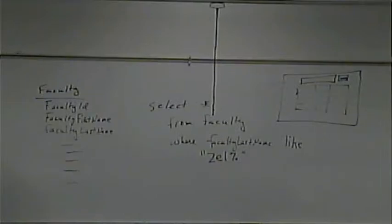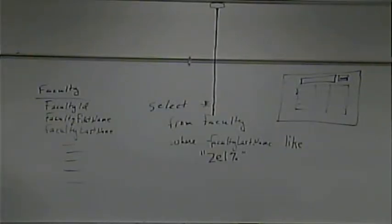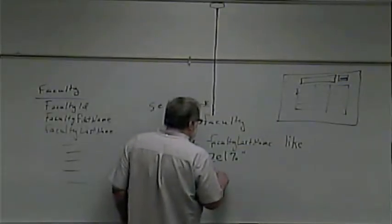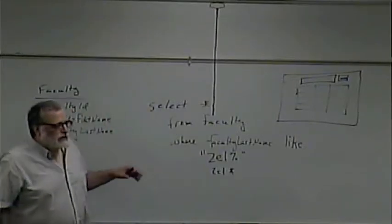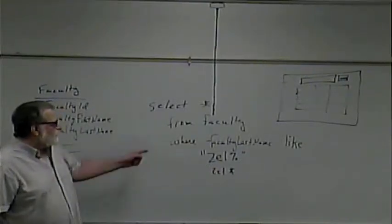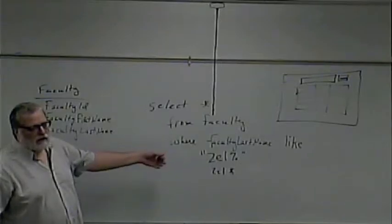That would match things starting with Z-E-L. I'm going to run this test just to be sure, because in standard SQL the wildcard is a percent sign, but I have a feeling you might use an asterisk when using an Access database. So I want to verify — it might be 'ZEL*'. Just hold open the possibility it might be one of two things. A ZEL followed by the wildcard character will give you things that start with ZEL.